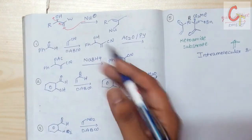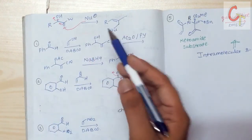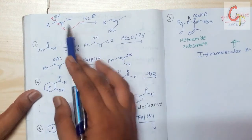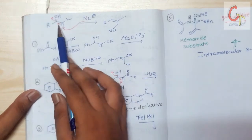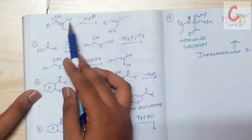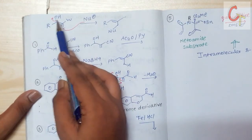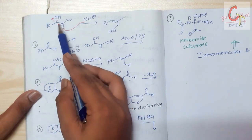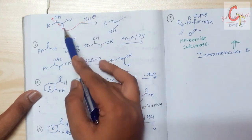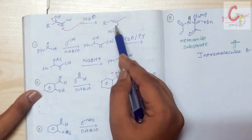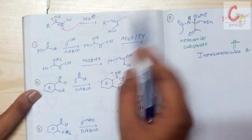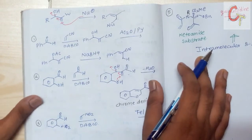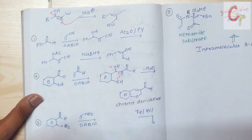After getting the Baylis-Hillman product, we can attack a nucleophile to form an alkene product. A nucleophile will attack on this carbon atom, and the OH leaves as a leaving group, the double bond shifts here, and the nucleophile attack gives the nucleophilically substituted alkene.